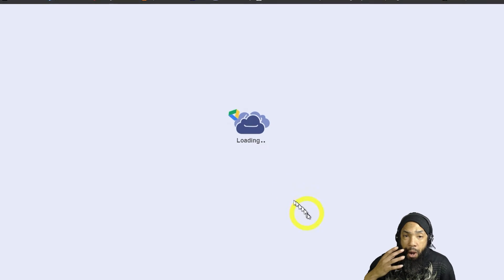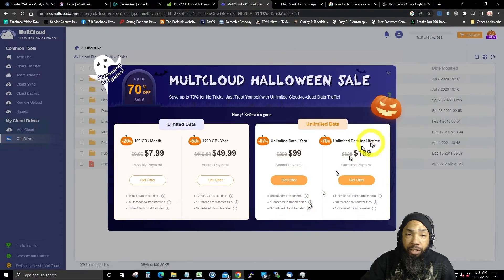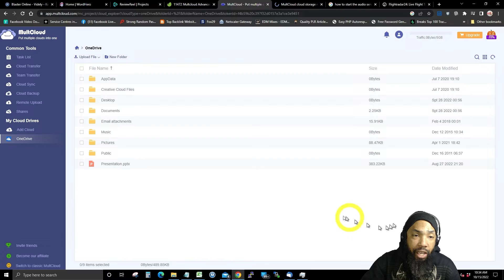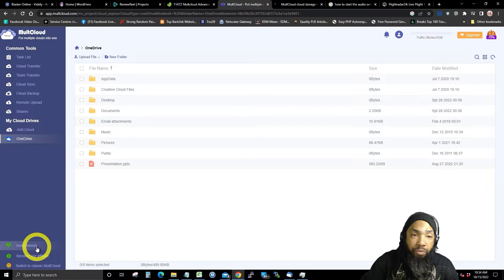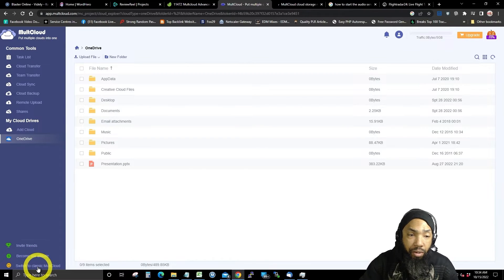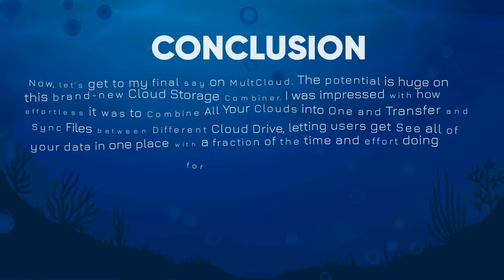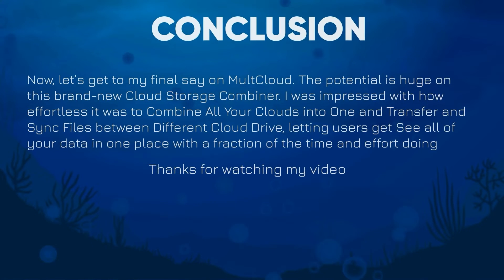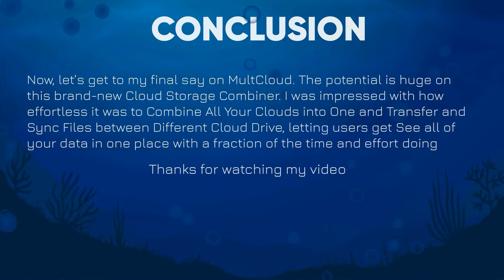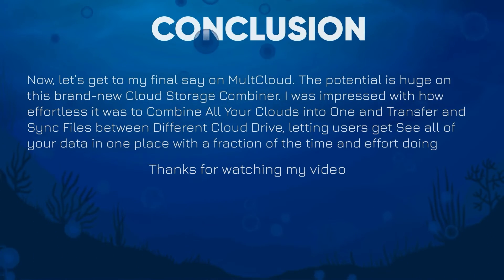As soon as you get in, you are in your drive — it shows you the offers they have. These are what I have in my OneDrive, present here for me, and I can use it to move content to other clouds or do different things. MultCloud has some of the best features I've seen in a cloud storage combiner. It simplifies how you combine all your clouds into one and transfer and sync files between different cloud drives while also letting you see all your data in one place.